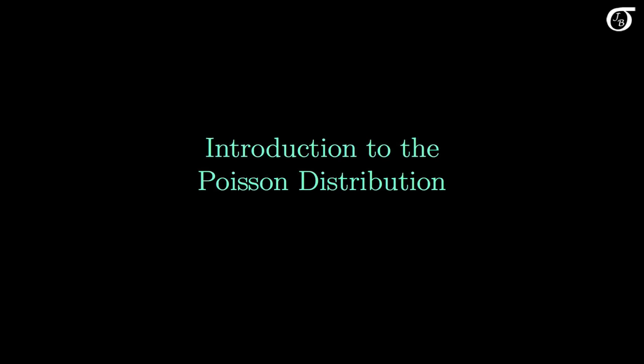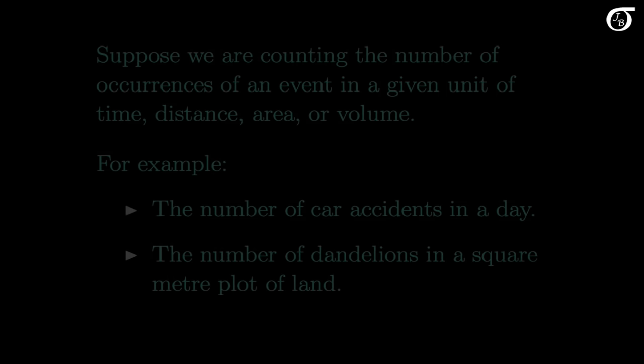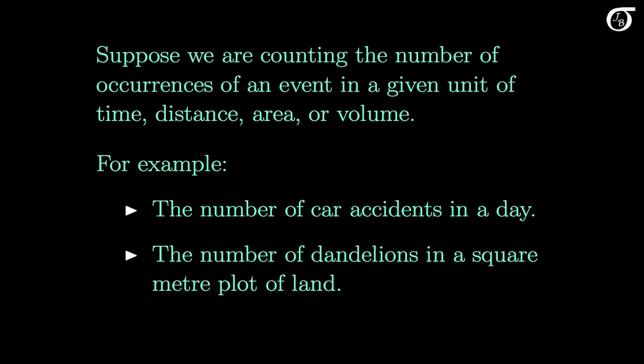Let's look at an introduction to the Poisson distribution, an important discrete probability distribution. Suppose we are counting the number of occurrences of an event in a given unit of time, or distance, or area, or volume. For example, we might be counting the number of car accidents in a day in a city like Toronto, or the number of dandelions in a square meter plot of land. The number of events is going to be a random variable that may or may not have the Poisson distribution, depending on the specifics of the situation. A Poisson random variable is a count of the number of occurrences of an event.